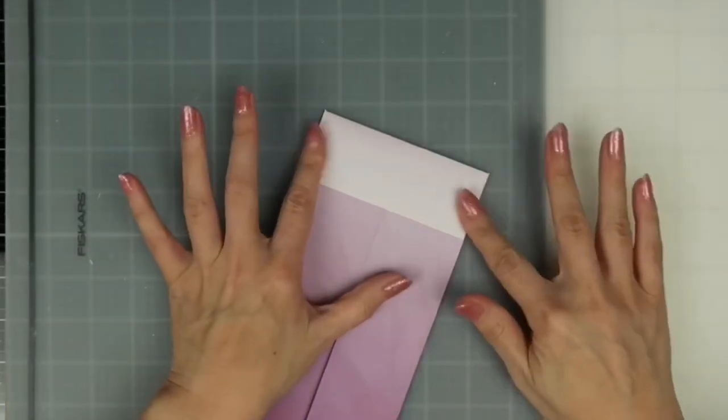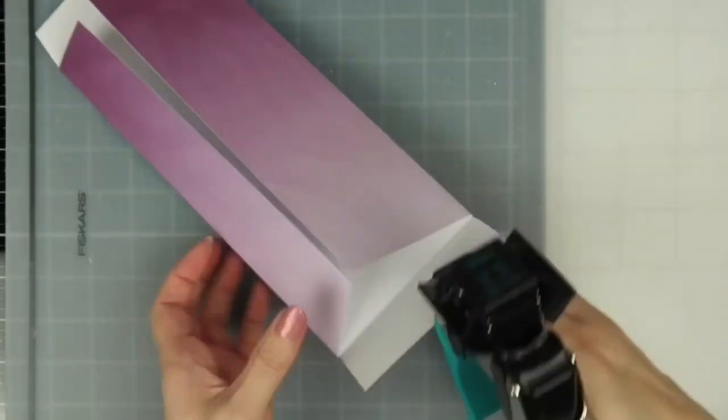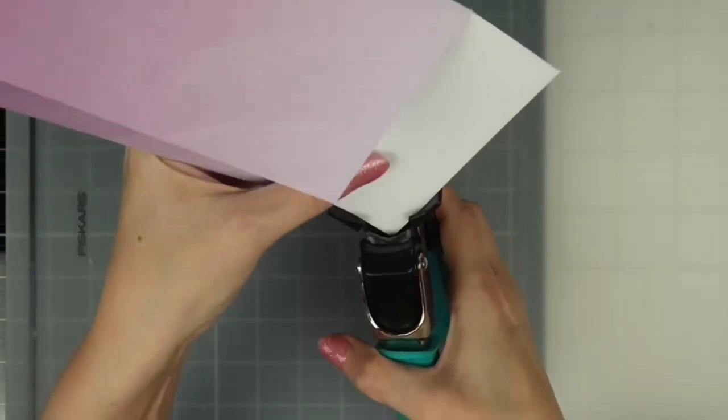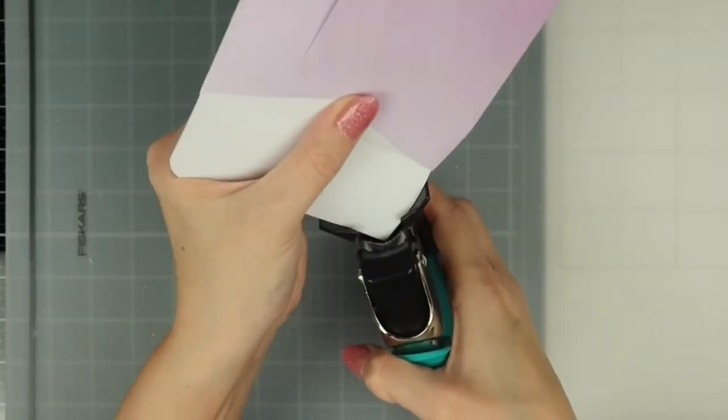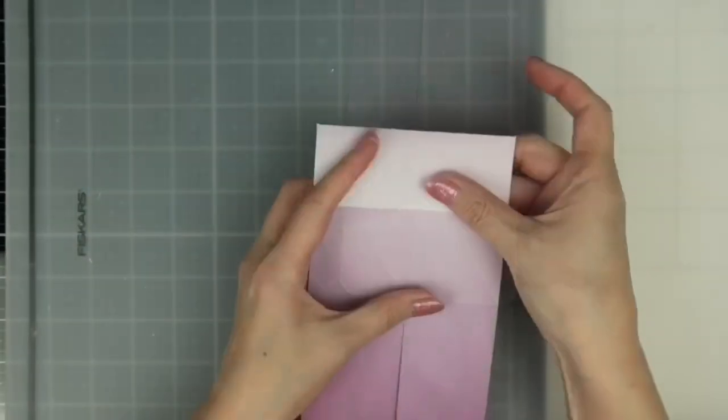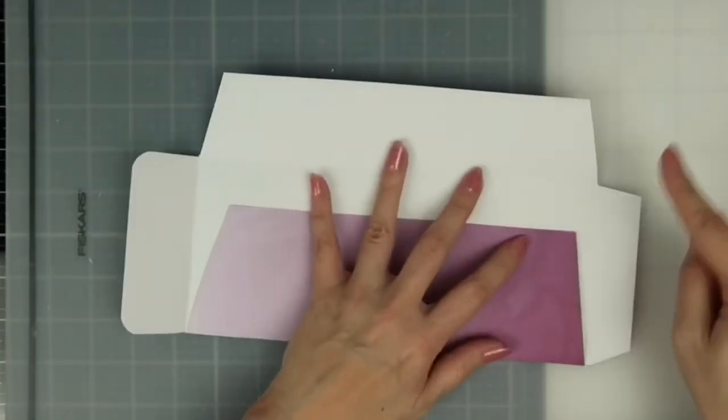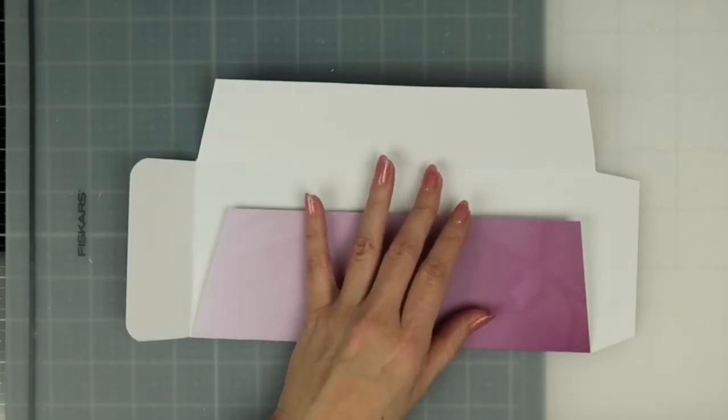I'm now taking my corner chomper and rounding the corners of my flap using the half inch side.